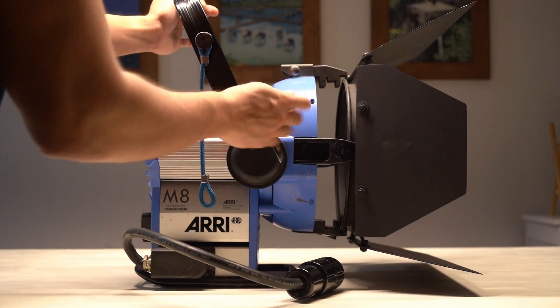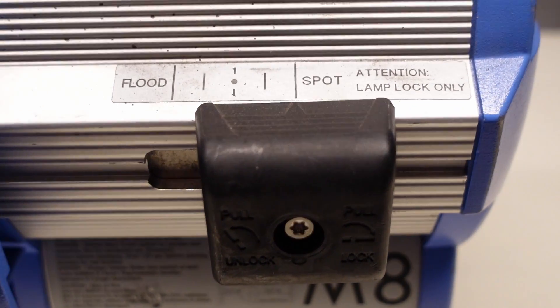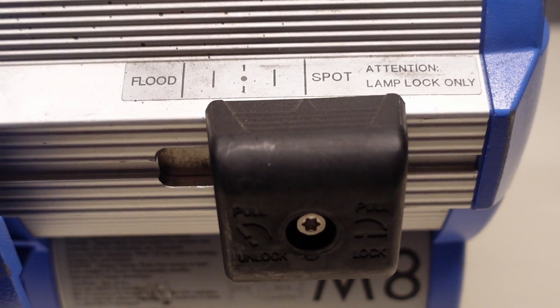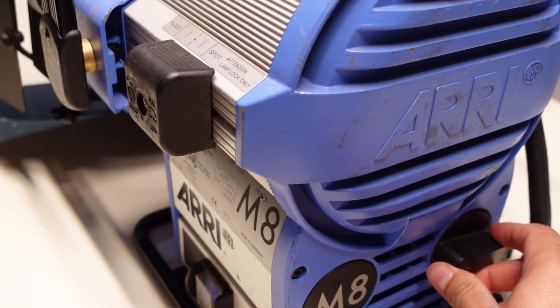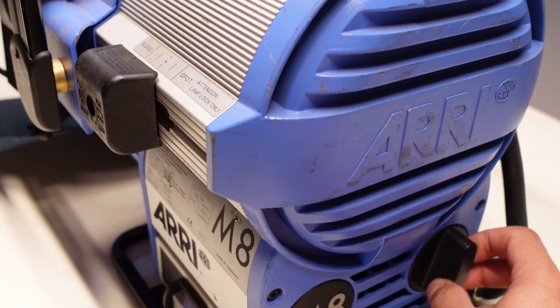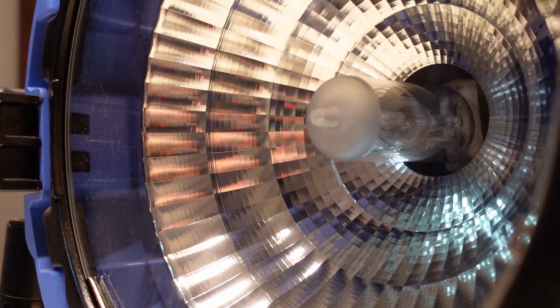The spot and flood controls the spread of the light. So if you want to have a wider spread of the light, you want the bulb to be closer to the glass. And if you want to have a narrow spread of the light, you should position the bulb so it's further away from the glass. If you don't know, there is an indicator of spot and flood on the side of the light.